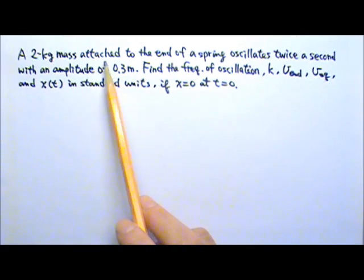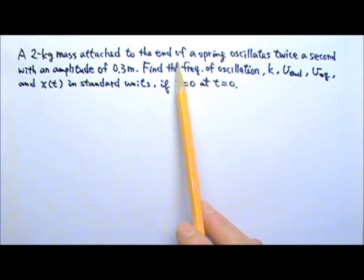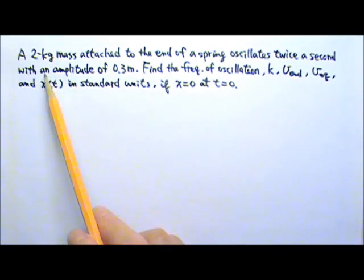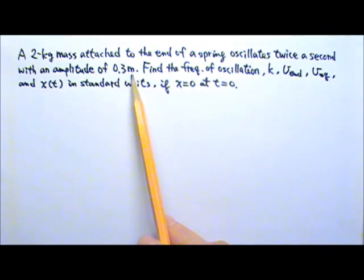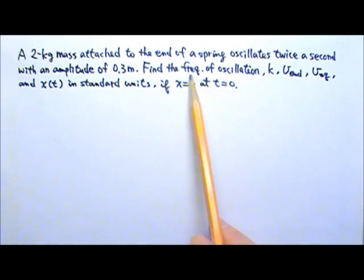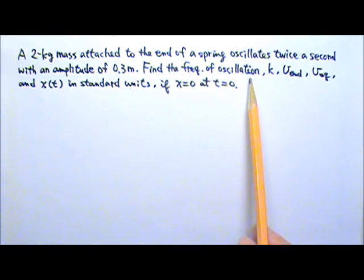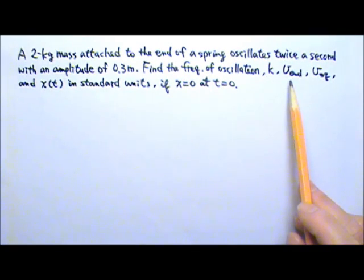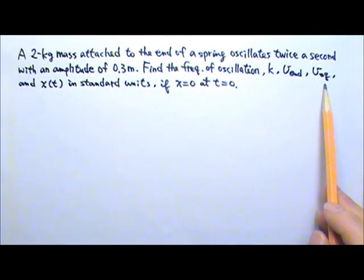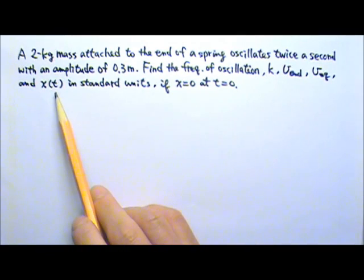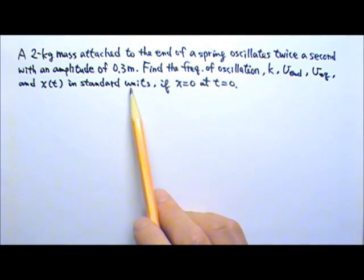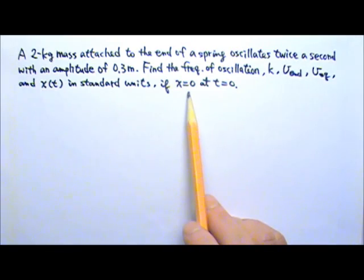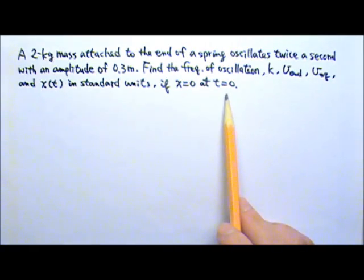A 2 kg mass attached to the end of a spring oscillates twice a second with an amplitude of 0.3 m. Find the frequency of the oscillation, the spring constant k, the speed at the end point, speed at the equilibrium, and the position as a function of time in standard units, if x equals 0 at t equals 0.